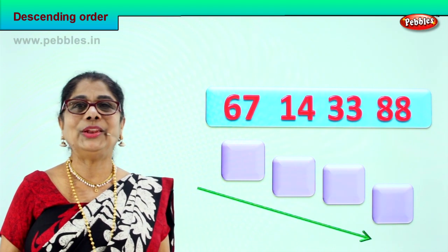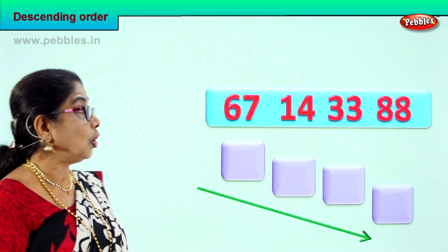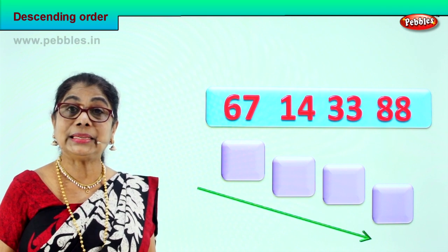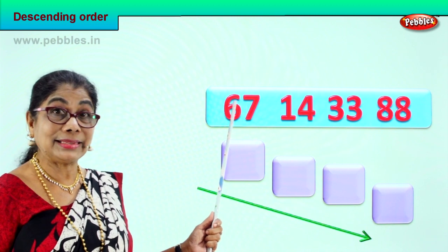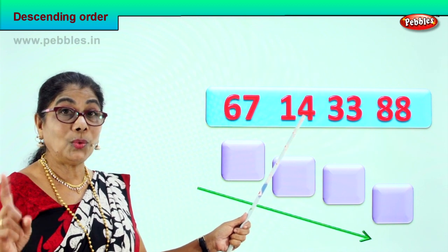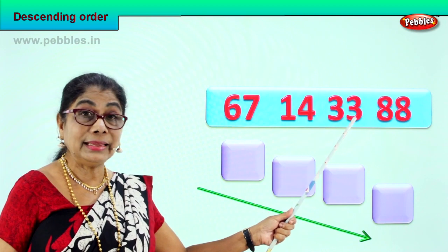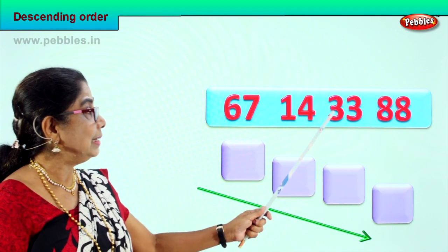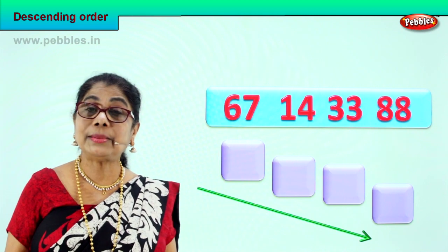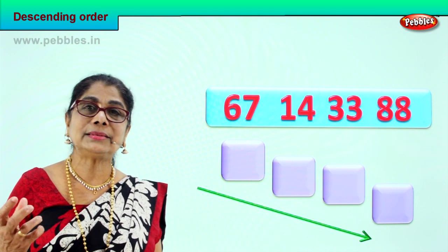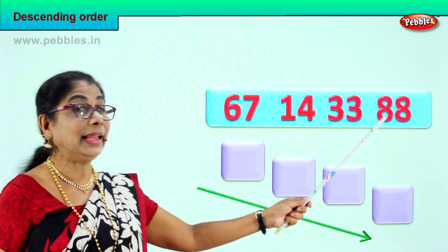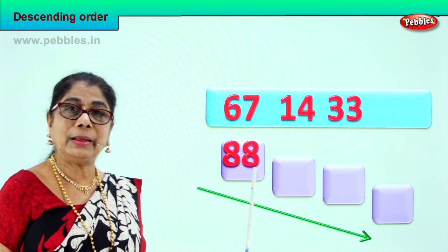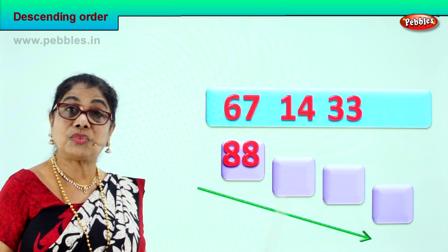Shall we go to another exercise? We look at the numbers and check the tens places — tens places are very important to find the biggest number. Sixty-seven: six tens. Fourteen: one ten. Thirty-three: three tens. Eighty-eight: eight tens. So we have eight tens, three tens, one ten, six tens. Which is the biggest? Certainly eighty-eight — eight tens, eight ones — so that's the biggest and we put it right on the top.